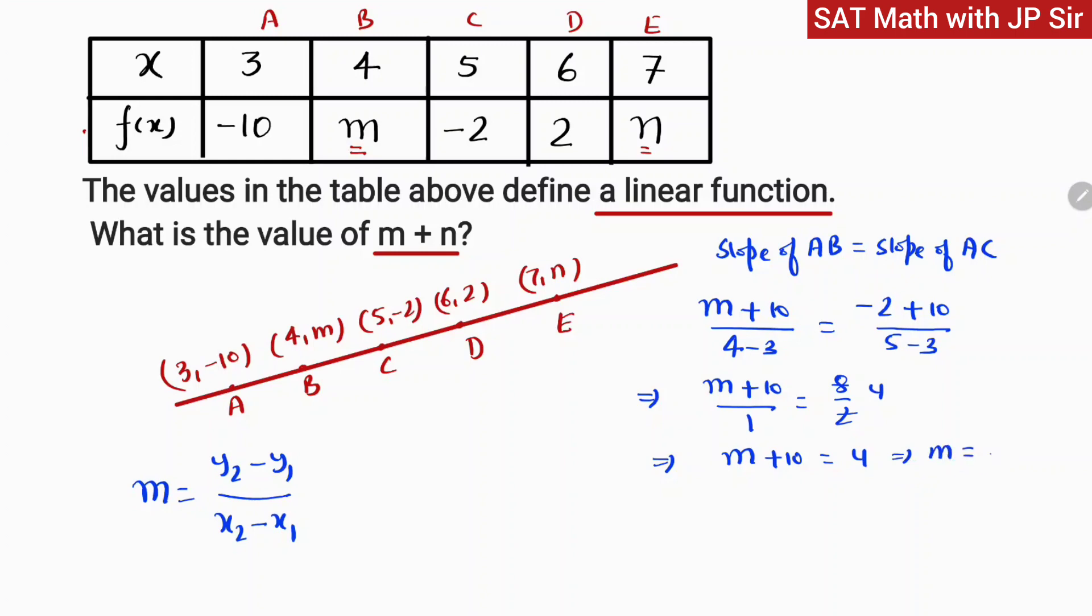Now we will solve for n. We can do slope of CD equal slope of DE. Slope of CD is 2 plus 2 upon 6 minus 5, and slope of DE is